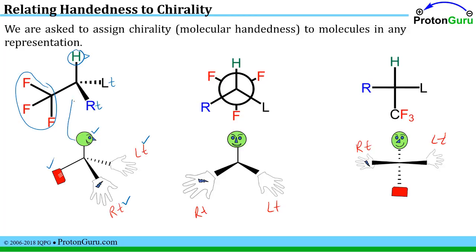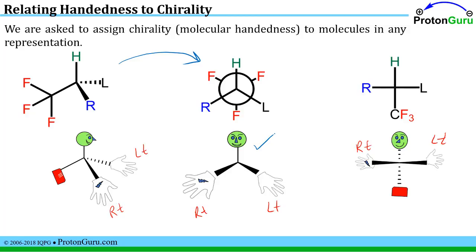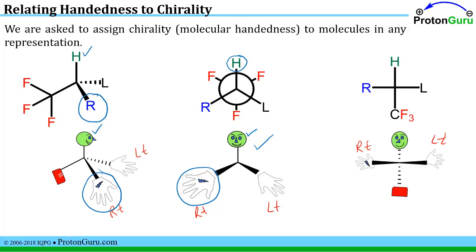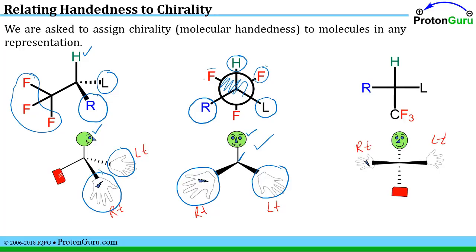If we imagine juxtaposing this person's outline over this tetrahedral line-bond representation, and we wanted to convert this same molecular structure into a Newman projection, we could think about turning this person, who's doing push-ups, to face us. The head of this molecule was a hydrogen, the person's right hand was the blue R group, the left hand was the L group, and the feet — hidden behind the circle in the Newman projection — is the CF3 group, with the three fluorines sticking out from behind that circle.